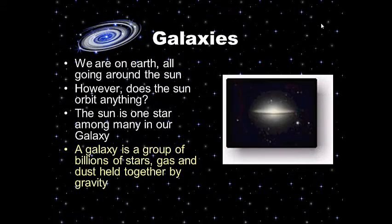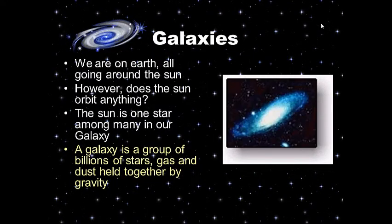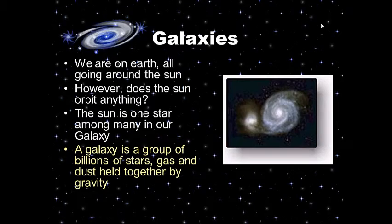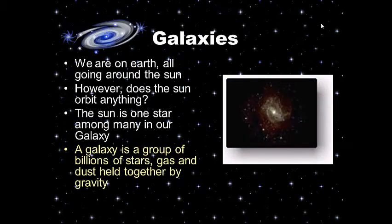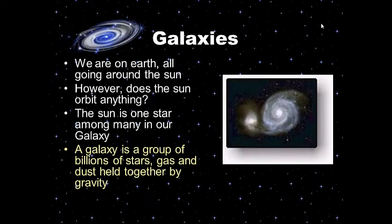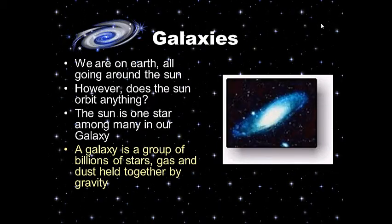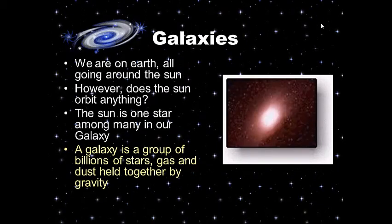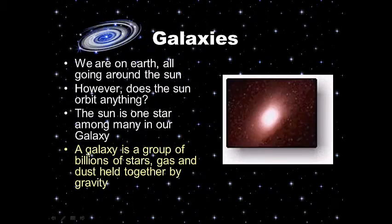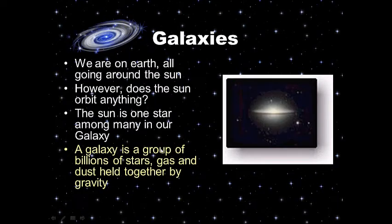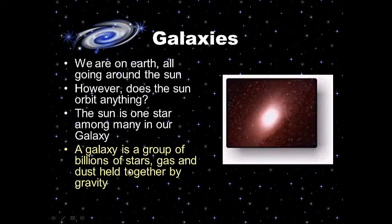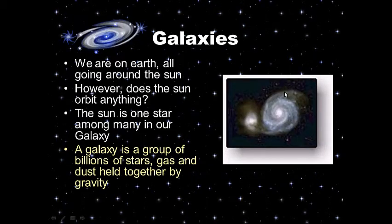Galaxies — we are on Earth, all going around the Sun. However, does the Sun orbit anything? Our Sun is one among many — among billions — in our galaxy. So if we define a galaxy: a galaxy is a group of billions of stars, gas, and dust held together by gravity.